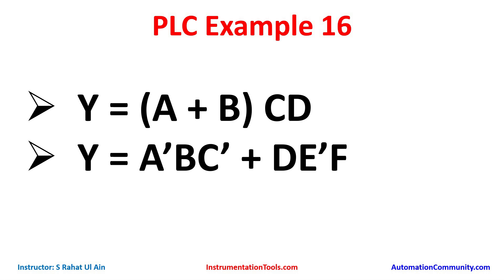So we will start with the first one, that is Y is equal to A plus B into C D. For A, B, C and D we will use normally open contacts. A and B will be connected in parallel, so that means A plus B — that is an OR logic gate. Then C and D will be connected in series with each other and also with A plus B. So let's move to TI Portal where we will draw the ladder diagram for this Boolean expression.